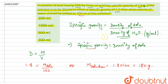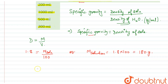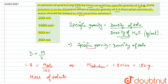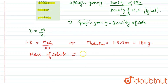We can now calculate the mass of solute. Since the acid is 62 percent by mass, the mass of solute equals 62/100 × 180, which comes out to be 111.6 grams.